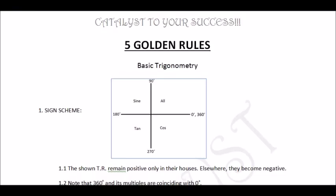Today we will start with basics of trigonometry, which we will encounter at the very beginning of Class 11. We will first go through the values of different trigonometrical ratios in different quadrants. The first quadrant is 0 to 90 degrees, second is 90 to 180, third is 180 to 270, and the fourth is 270 to 360 degrees.